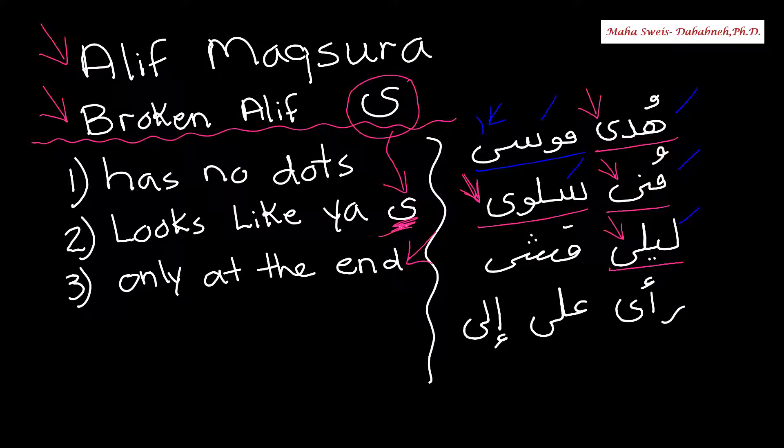Let's see some verbs now. Masha — Masha means he walked.